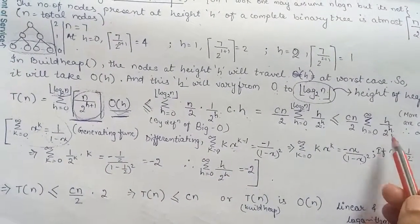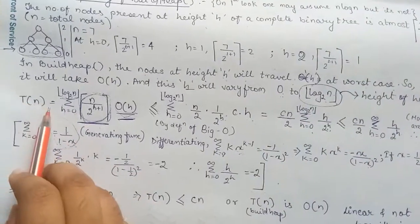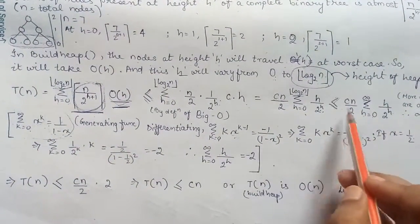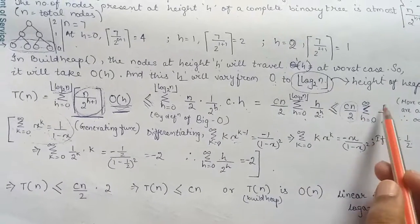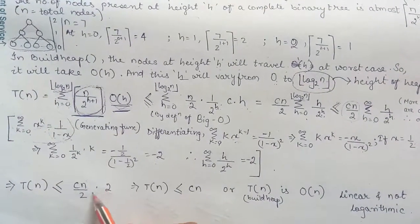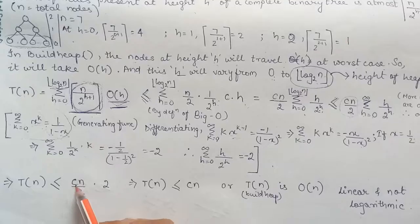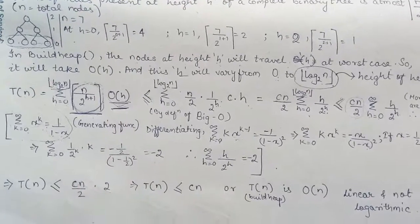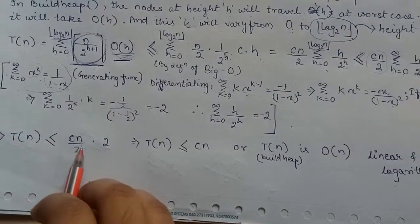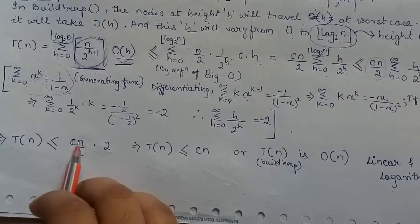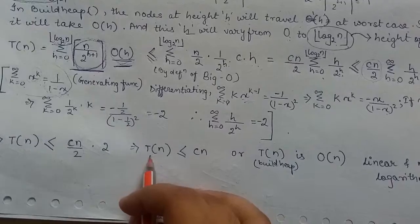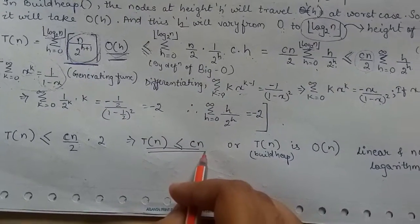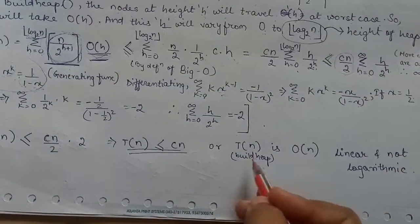Therefore instead of k if we write h we will get this term and its value is minus 2. Then this T(n) is less than equal to cn by 2 and this value is minus 2. Minus is adjusted by the c constant and then therefore the time complexity comes as the linear of the building.